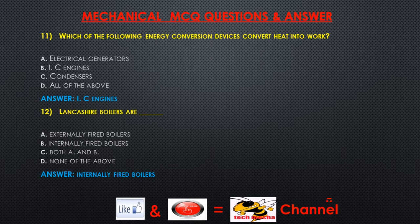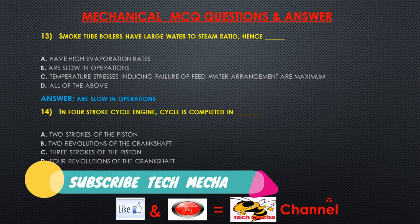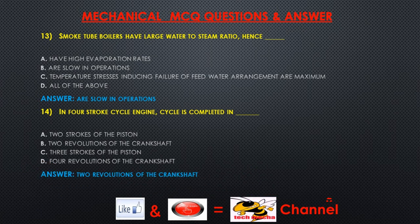Question 12: Lancashire boilers are — A) externally fired boilers, B) internally fired boilers, C) both A and B, D) none of the above. Answer: Internally fired boilers. Question 13: Smoke tube boilers have a large water-to-steam ratio. Hence — A) they have high evaporation rates, B) they are slow in operation, C) temperature stresses inducing failure of feed water arrangement are maximum, D) all of the above. Answer: They are slow in operation.